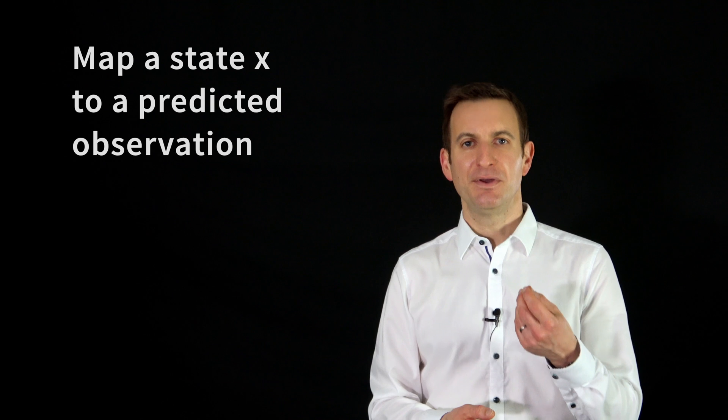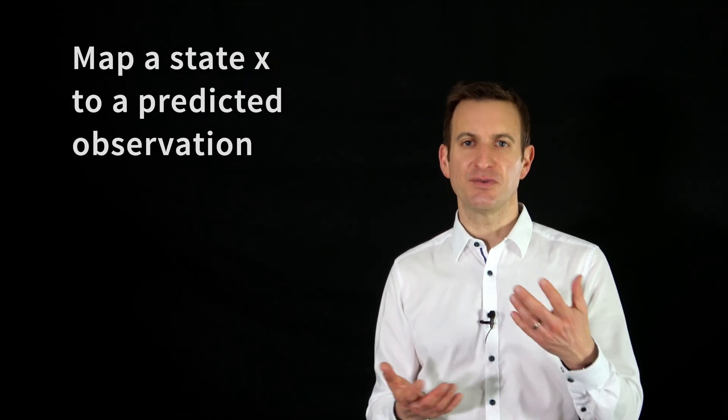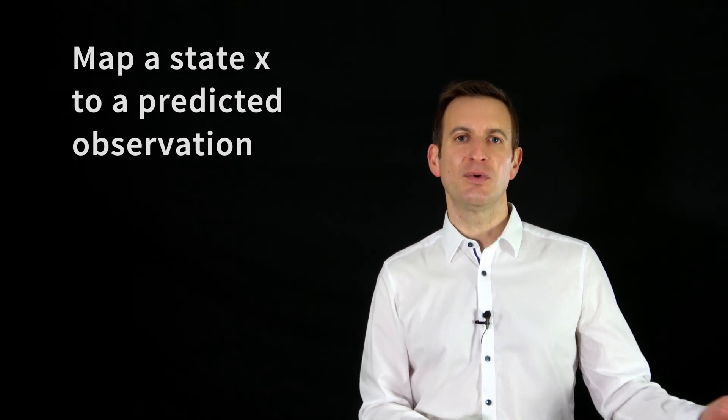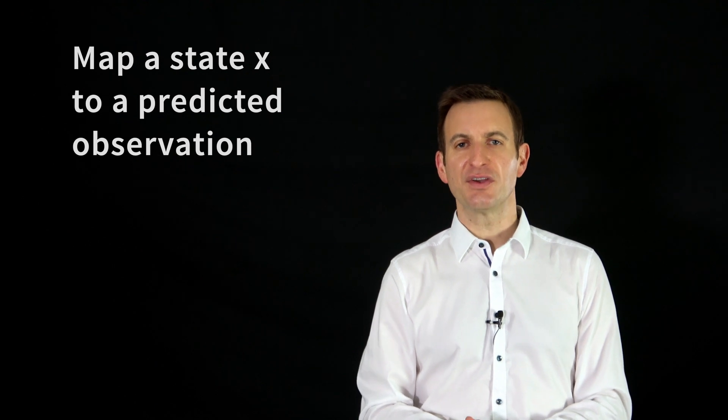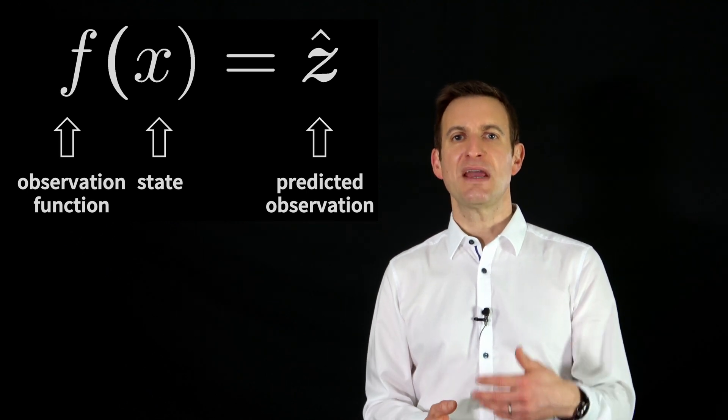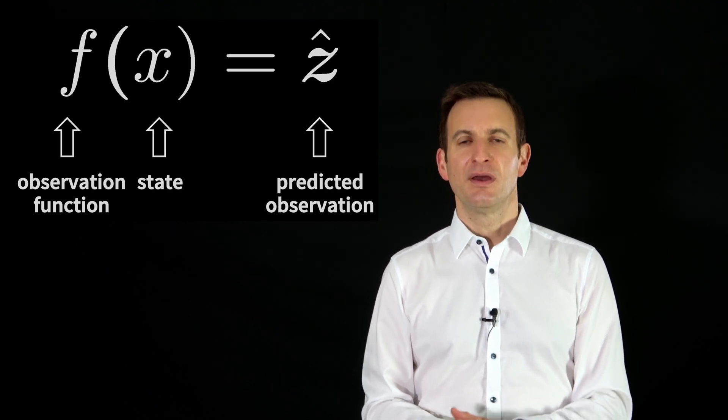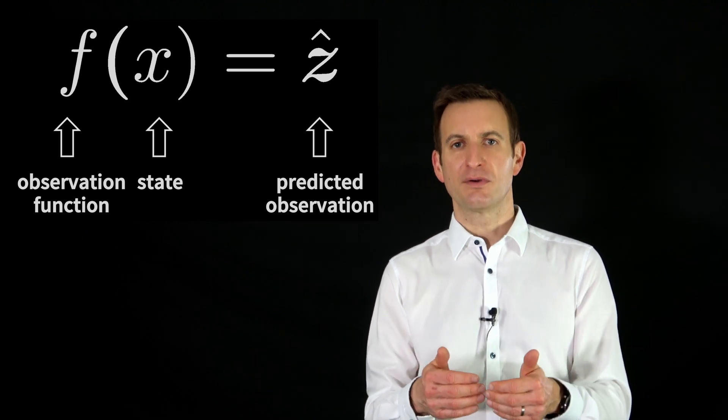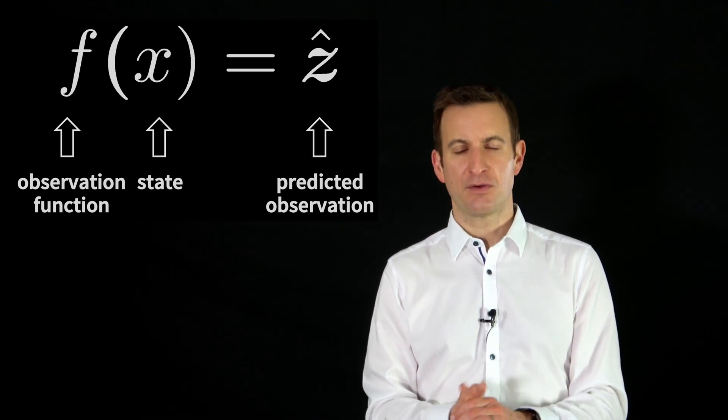What you need to do in order to use a least squares approach is you need to be able to map your parameters or unknowns or states into what I call predicted observations using a so-called observation function. You have a function f which takes as input the states or parameters and it should generate predicted observations—what should you observe given those parameters would be the correct ones.